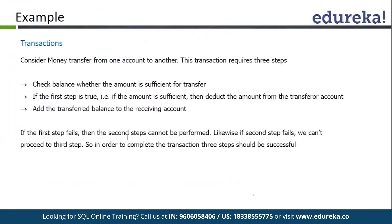For example, we have to transfer money from one account to another. In that case, first of all we are going to check that if the amount is sufficient in our account or not. If it is fine, we are going to deduct the amount and transfer it to the next account. This is a process, a cycle that should go. This cycle is done in a transaction so that if anything unexpected occurs, we can roll back and come back to our initial stage.